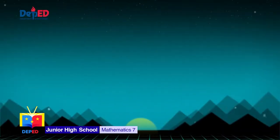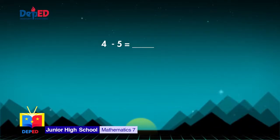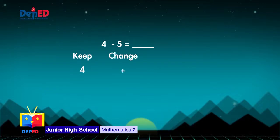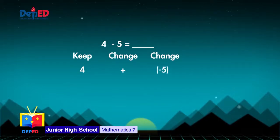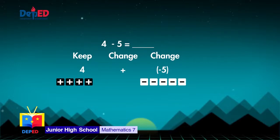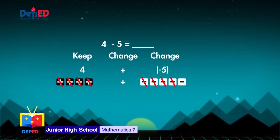Number 2: 4 minus 5. Keep the first integer the same, that is 4. Change the subtraction sign to addition. Then change the sign of the second integer, that is negative 5. To represent this using tiles, we will use 4 positive tiles for 4 and 5 negative tiles for negative 5. The 4 positive tiles and 4 negative tiles will cancel out each other, leaving one negative tile. In symbol, that is 4 minus 5 is equal to negative 1.